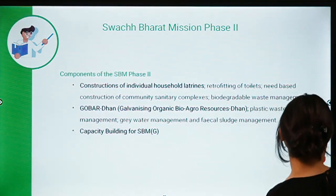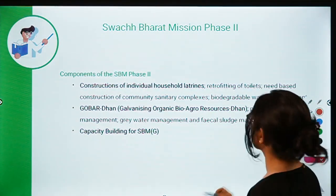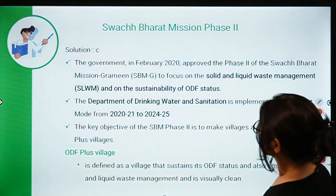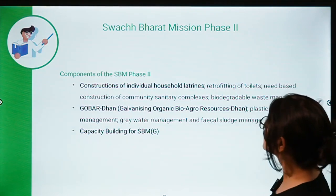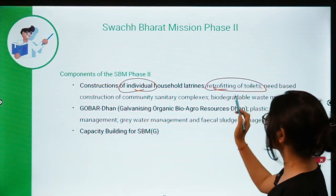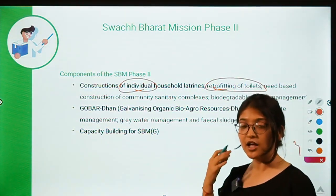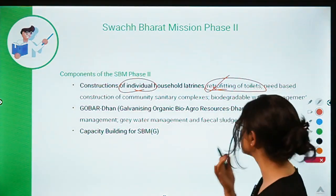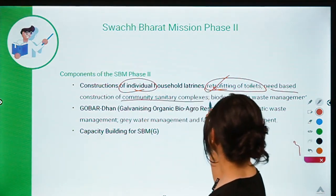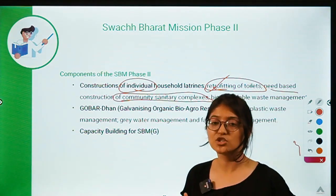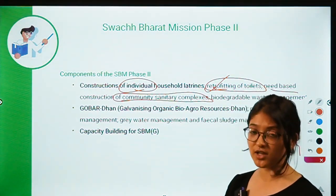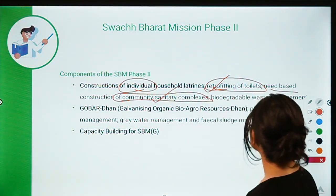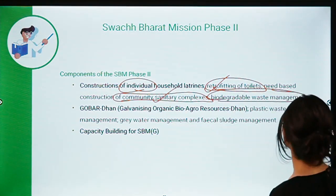The components of Swachh Bharat Mission Phase 2 include: first, construction of individual household toilets; second, retrofitting of toilets — meaning adding additional features to already constructed toilets; third, need-based construction of community sanitary complexes for villages where there isn't enough space for individual toilets; and fourth, biodegradable waste management.